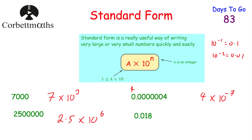There's a useful shortcut for small numbers. A student once pointed out: for 0.000004 there are 7 zeros in front of the number, so the power is negative 7. If you want to find the power, just count the number of zeros in front of the significant digit. That's the method I now use for small numbers — count the zeros in front and write that as the negative power.